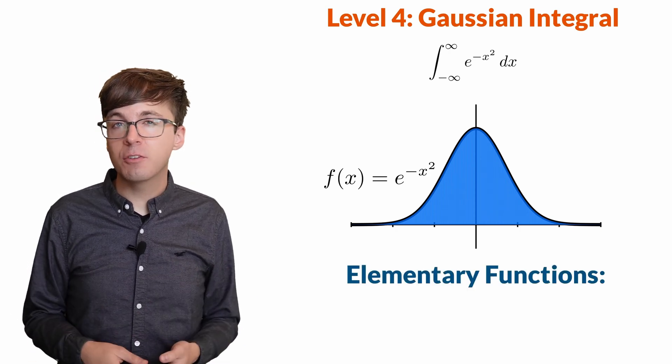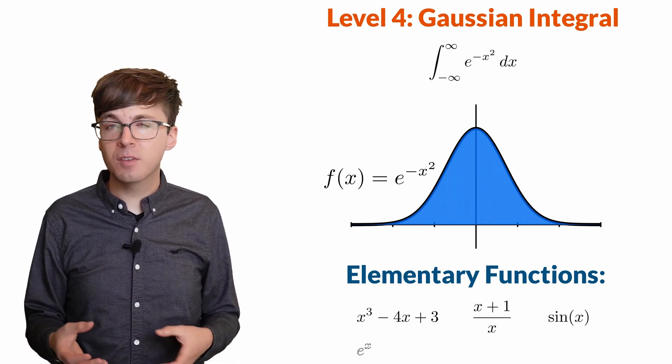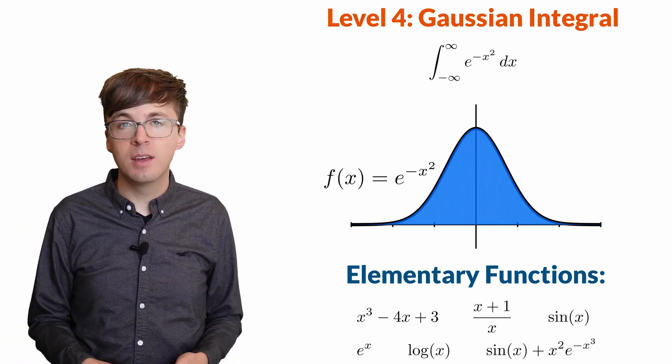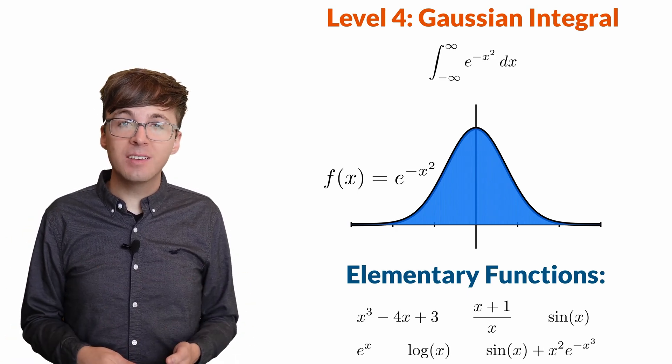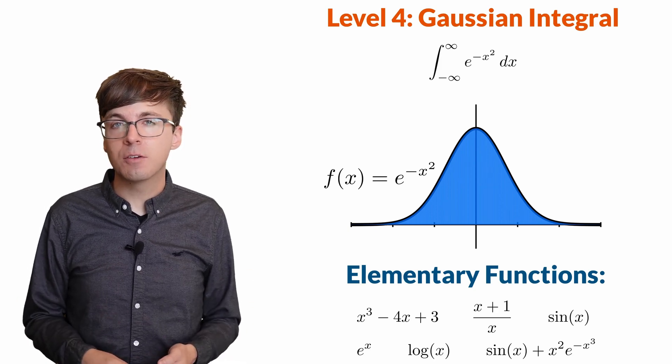Now it turns out there's no antiderivative for e^(-x²) in terms of the elementary functions. These are all the functions we usually see in calculus—polynomials, rational functions, trig functions, exponentials, their inverses, their sums, and products, and so on. Even though we can't find a nice antiderivative for this function, we can solve this definite integral.